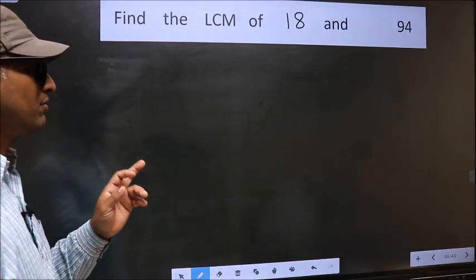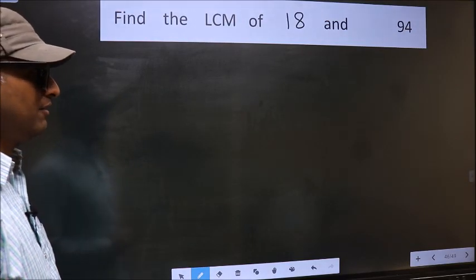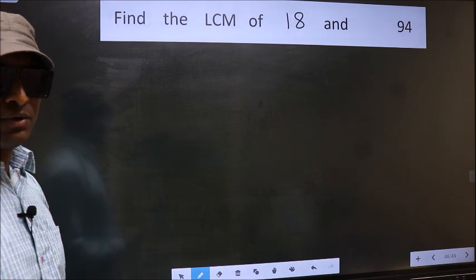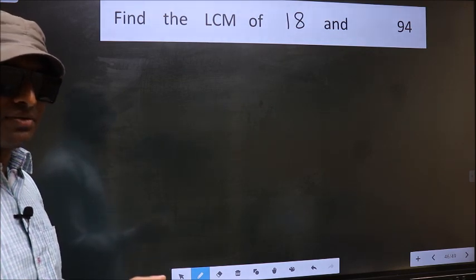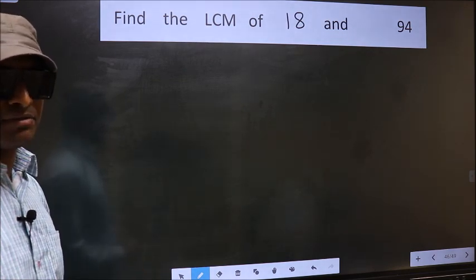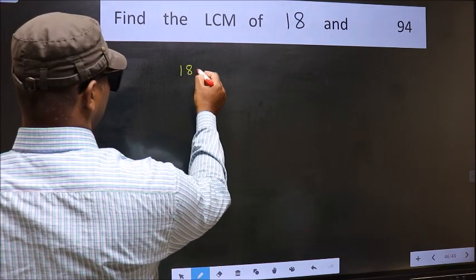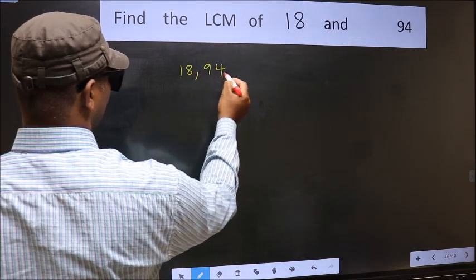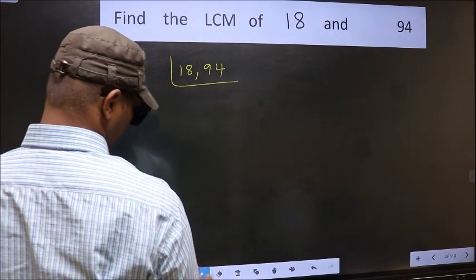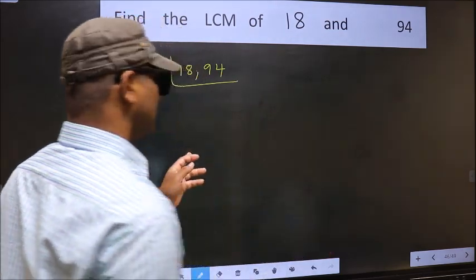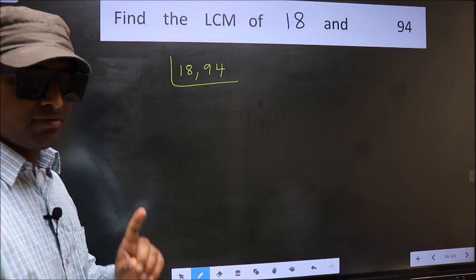Find the LCM of 18 and 94. To find the LCM, first we should frame it in this way. See, 18, 94. This is your step 1.